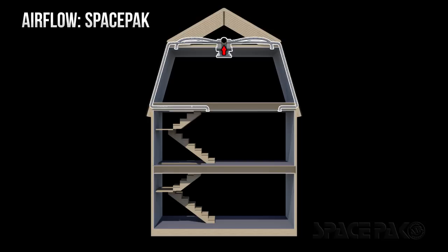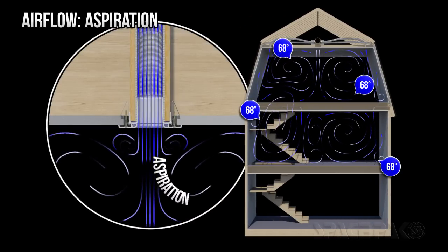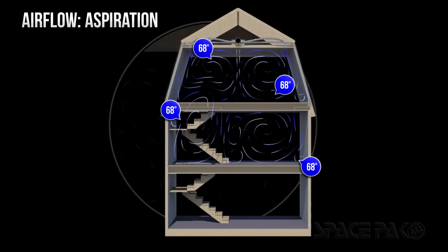A SpacePak system also has return and supply vents. However, they're laid out a little different. SpacePak's airflow takes advantage of the principle of aspiration, which means as soon as the airflow enters the room, it expands and mixes in the conditioned air.